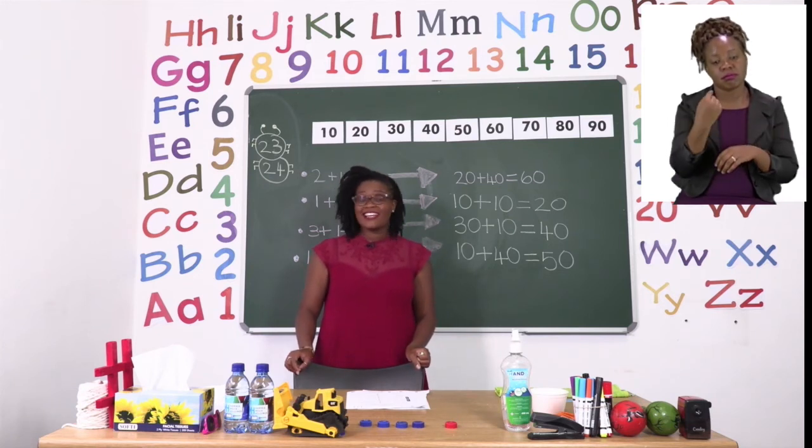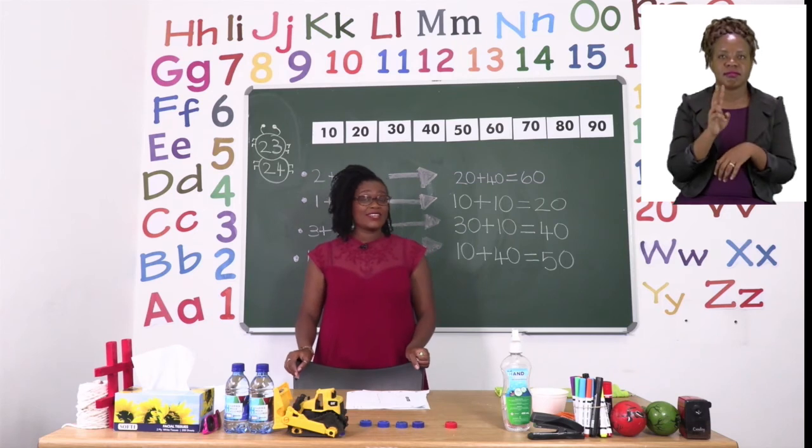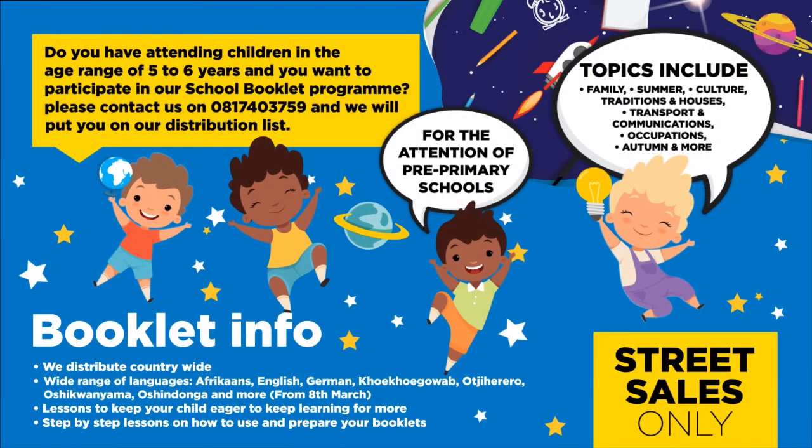Have fun and I'll see you soon after our advert break. Do you have children in the age range of 5 to 6 years and want to participate in our school booklet program? Please contact us on 08174 3759 and we will put you on our distribution list for the attention of pre-primary schools. Topics include family, summer, culture, traditions and houses, transport and communications, occupations, autumn and more. We distribute countrywide in over seven different languages.